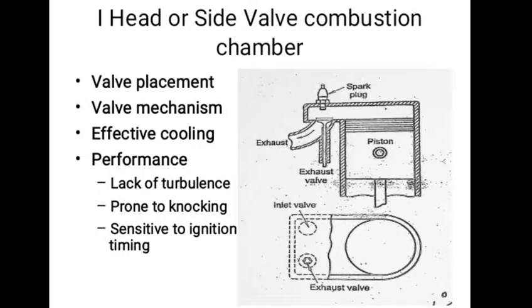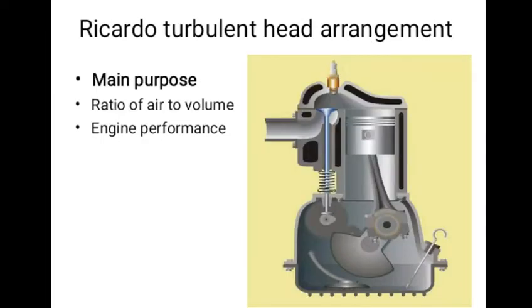Due to these limitations, this arrangement was not preferred for higher compression ratios as compared to overhead valve engines. The main purpose of the Ricardo turbulent head arrangement was to obtain higher flame speed and to reduce the knocking tendency.